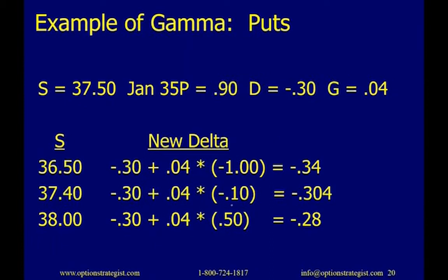The same calculation now applies to puts. The key is that we're dealing with negative delta values. I show both calls and puts because there can be confusion when working with negative numbers.